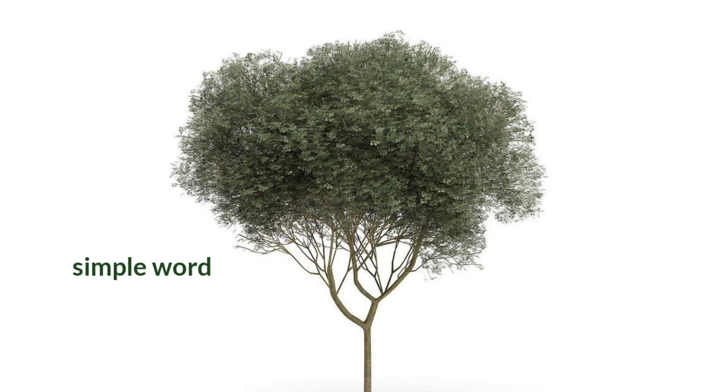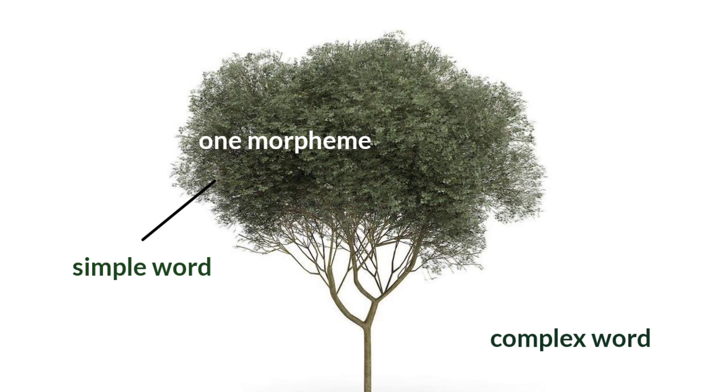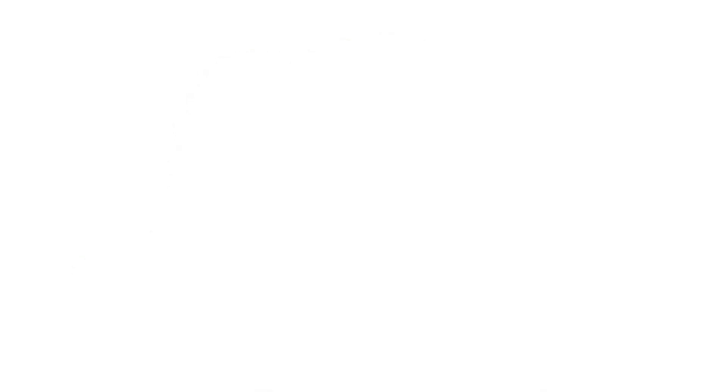Now, simple words usually contain only one morpheme, so there is no need to represent it in a tree diagram. Whereas if you have complex words which contain more than one morpheme, then we can draw a tree to see its structure.